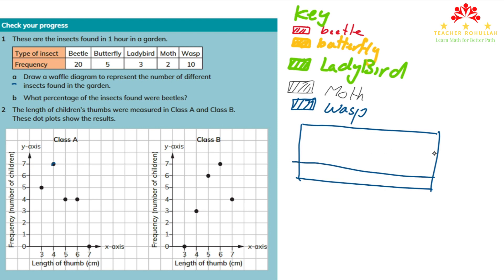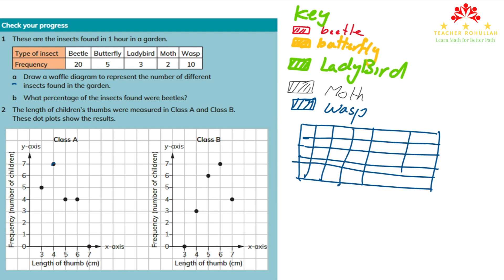We have five rows and eight columns. I'll start with the beetle — the color I chose is red — starting from the left side. We have to color 20 squares: one through twenty. Twenty of the insects are beetle. There are another five butterfly, and the color for butterfly is orange.